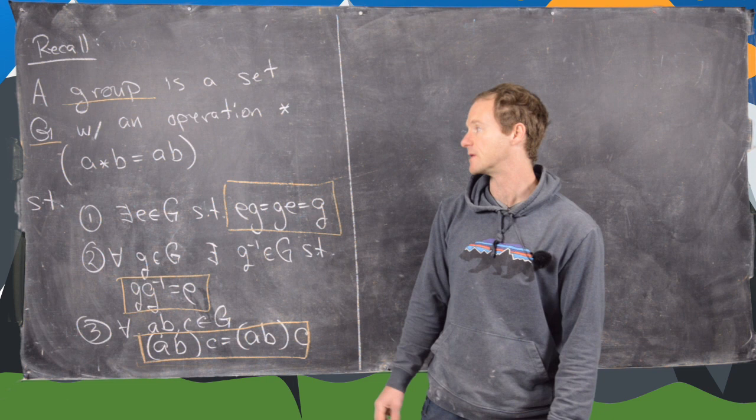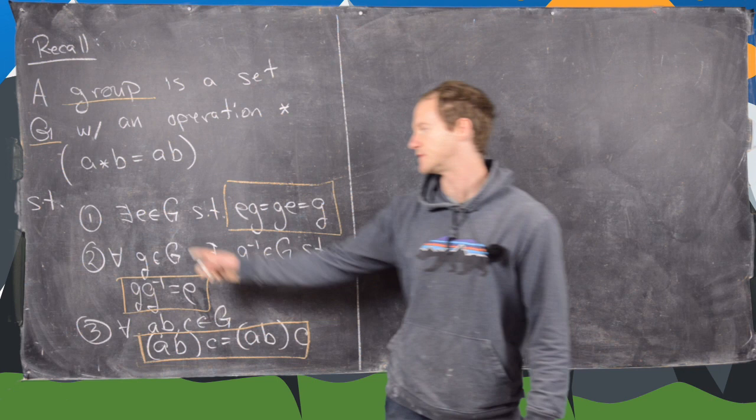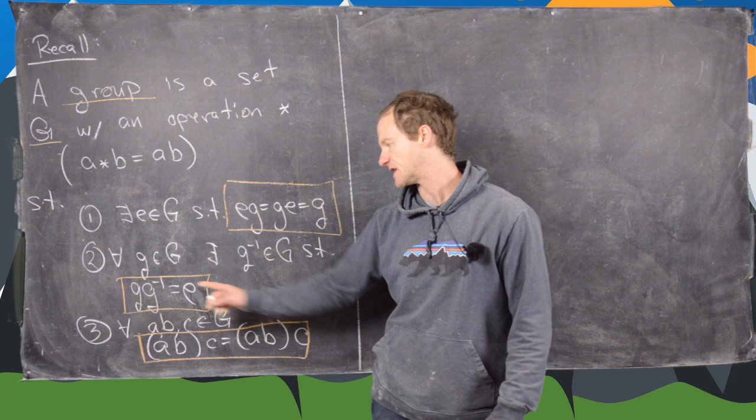But if you're dealing with an arbitrary group, you generally just put the letters next to each other. And it satisfies three axioms. So we've got this identity element which we generally call E. So EG equals GE which is G for all elements G. And then every element G has an inverse that takes it back to the identity. And then finally you've got this associativity property.